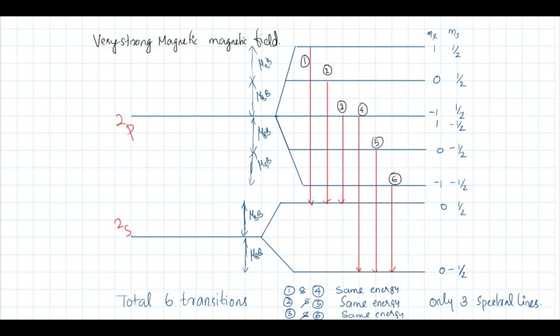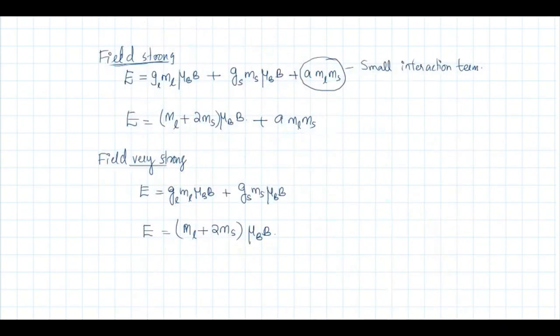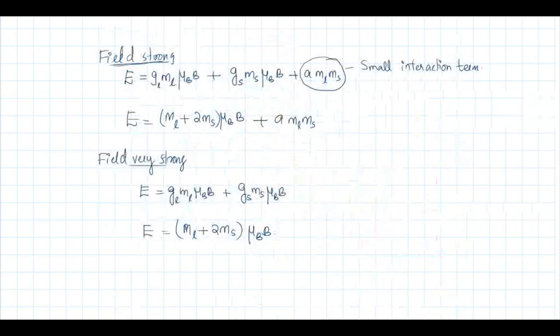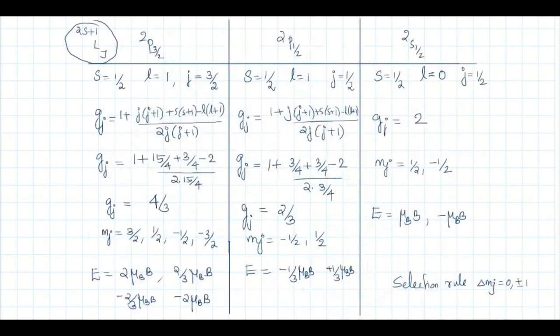In a very strong magnetic field, the A·m_l·m_s term is negligible. The six transitions again reduce: lines 1 and 4 have the same energy, and lines 3 and 6 have the same energy, leaving only three spectral lines. So for the 2P to 2S transition: in a very weak field (anomalous Zeeman), 10 lines; in a strong field (Paschen-Back), 5 lines; in a very strong field, 3 lines. These effects all depend on the interaction of magnetic moment with the external magnetic field.